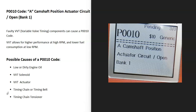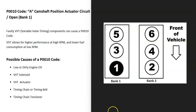If you have a V6 or V8 engine, bank one is always the side of the engine with the number one cylinder. Find the number one cylinder — that side is bank one, and the opposite side is bank two. If you have a four-cylinder engine, it doesn't matter because you only have one bank.